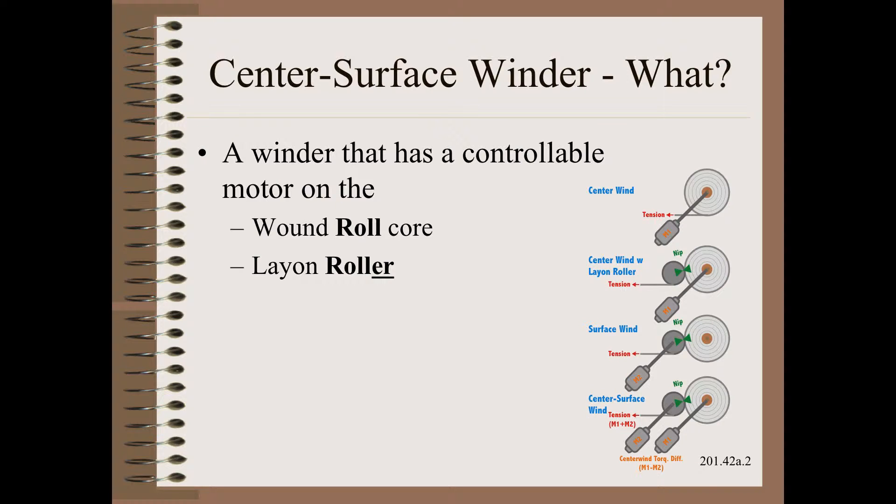Recall from Web 101 that the motor, in this case the sum of two motors minus drag, makes tension and that the difference between these two motors makes the center surface wind torque differential knob.